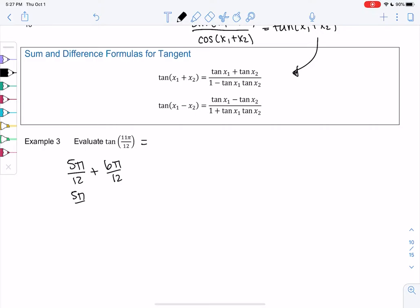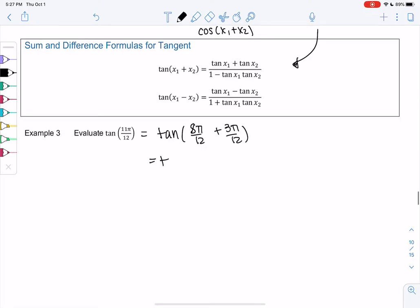Which is 5π over 12 plus π over 2. π over 2 is helpful. 5π over 12 isn't. So what ends up being helpful on this one is 8π over 12 plus 3π over 12. A little bit of guess and check until we find one that works. And the reason this works is 8π over 12 simplifies to 2π over 3, which we know that on the unit circle, plus π over 4.